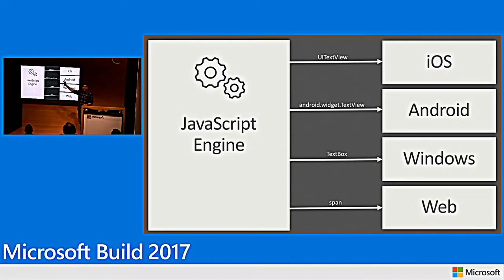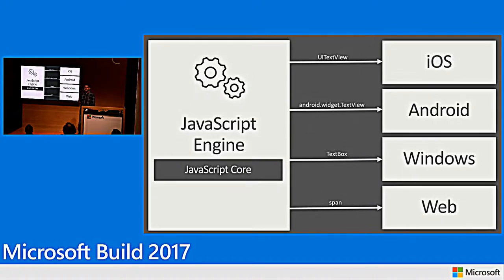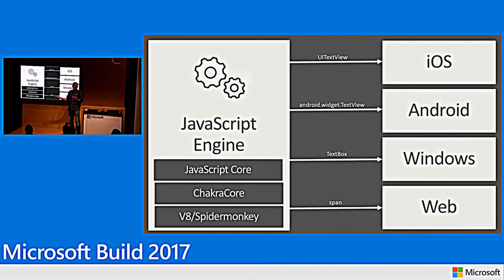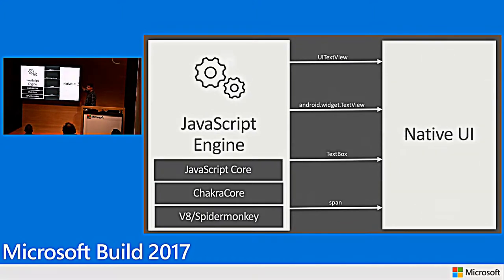JSC is already packaged in your iOS device, so it just uses JSC on iOS and Android. If you're using a Windows phone, it uses Chakra Core. And if you're using the web, the browser already has a JavaScript engine like Chakra or SpiderMonkey. On the other side, all of this is native user interfaces. That's what makes React Native so attractive — you write JavaScript code, but what you get at the end of the day is a real native application.